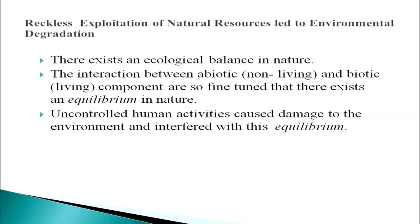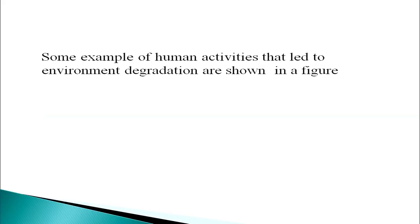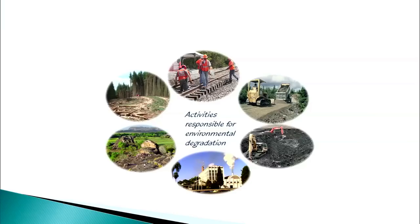There exists an ecological balance in nature. The interaction between abiotic and biotic components are so fine-tuned that there exists an equilibrium in nature. Uncontrolled human activities cause damage to the environment and interfere with this equilibrium. Some examples of human activities that led to environmental degradation are shown in a figure. There is enough of everything on earth for man's need but not for man's greed.